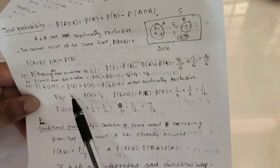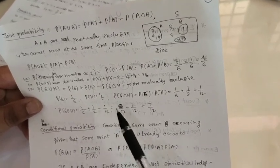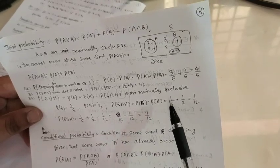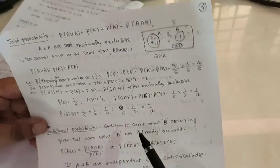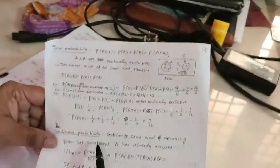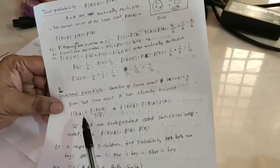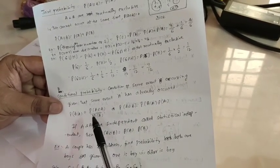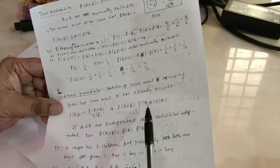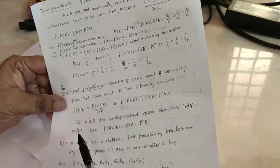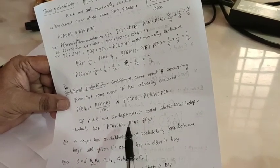Next is conditional probability: the probability of some event B occurring given that event A has already occurred. That is written as P(B|A) equals P(A intersection B) divided by P(A). Or, P(A intersection B) equals P(B|A) into P(A). If A and B are independent, called statistically independent, then P(A intersection B) equals P(A) times P(B).